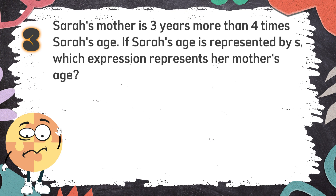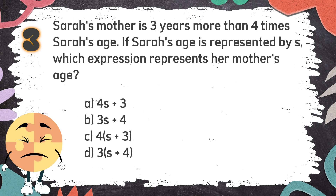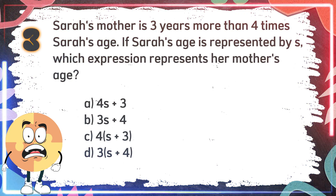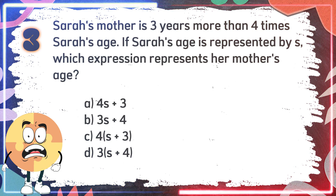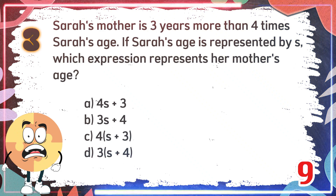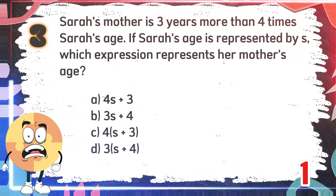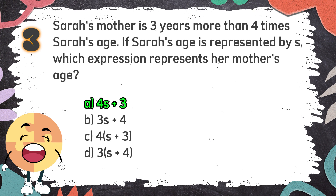Number 3: Sarah's mother is 3 years more than 4 times Sarah's age. If Sarah's age is represented by S, which expression represents her mother's age? The choices are: A. 4S plus 3, B. 3S plus 4, C. 4 times the sum of S and 3, D. 3 times the sum of S and 4. The correct answer is A. 4S plus 3.